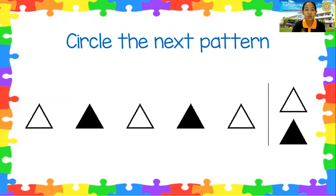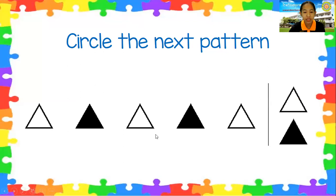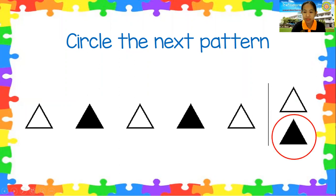Now we are going to circle the next pattern. Look at the patterns here. It's white, black, white, black, white. What do you think is the next pattern — is it white or black? It's black. Very good.